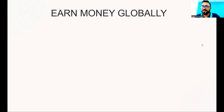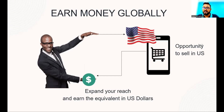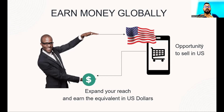Now we come to the title of our talk for the evening: how to earn money globally. This program has been launched in the US. Your opportunity, ladies and gentlemen, is to sell the products in the US through our affiliate program. You can expand your reach — your presence online — and that reach can earn you the equivalent of US dollars, which is amazing. In connection to that, it would always be best to create a PayPal account. That is the best way to receive your commissions in US dollars, which allows you to hedge against inflation by earning in US dollars.